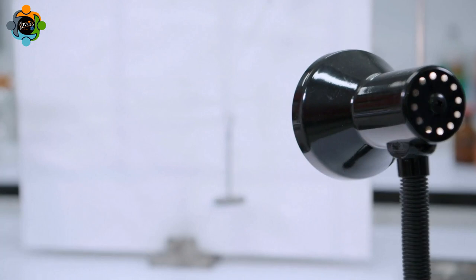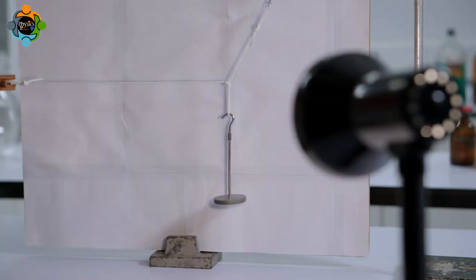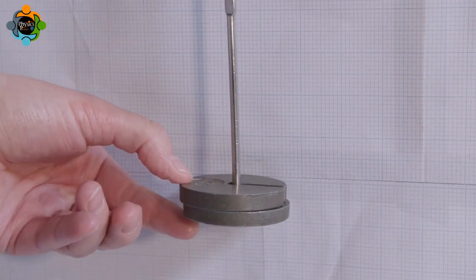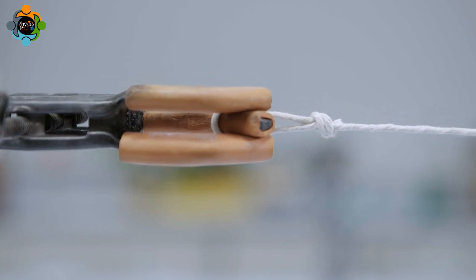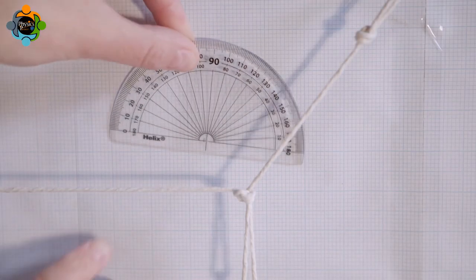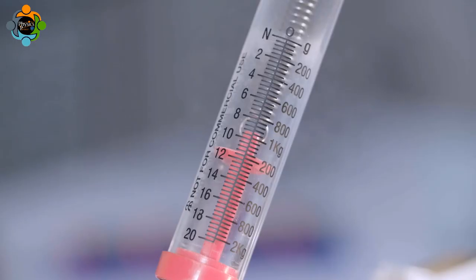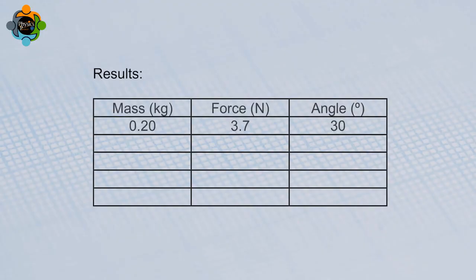Using a lamp to produce a shadow on a screen may make it easier. Take a reading from the Newton meter. Note down the reading from the Newton meter and the mass of the hanger in a table with headings: angle in degrees, force in Newtons, and mass.